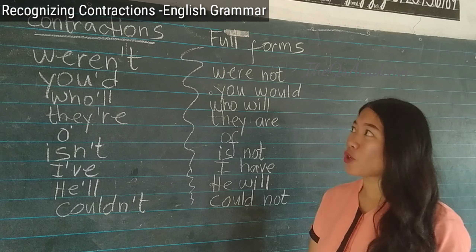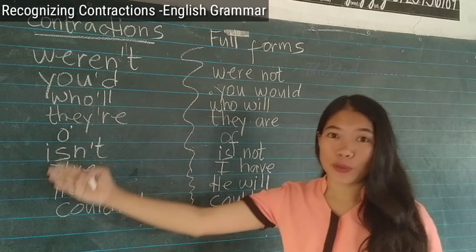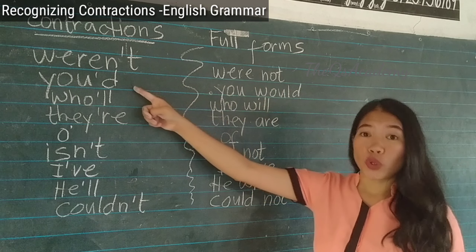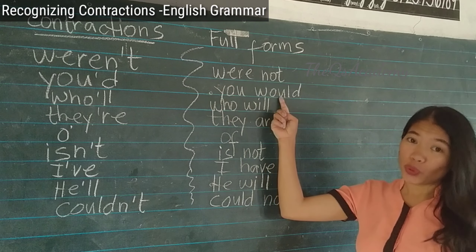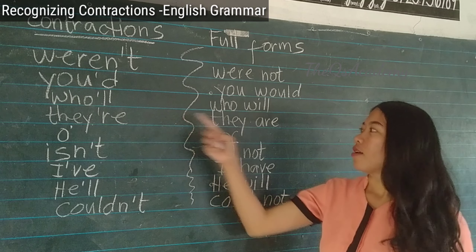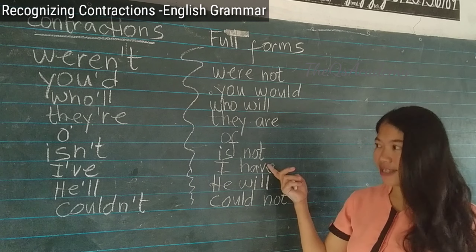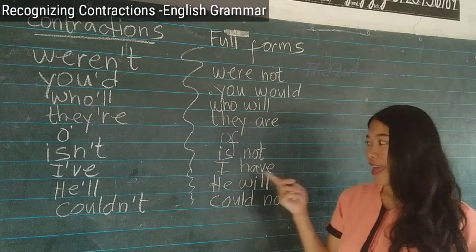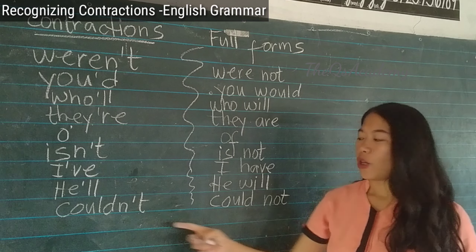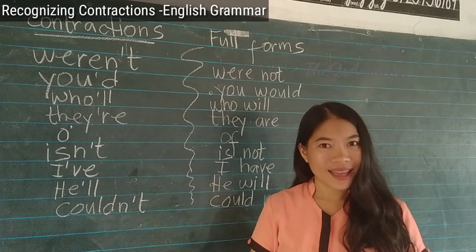Here are examples of contracted words and their full forms. 'Weren't' means 'were not'. 'Would' — 'you'd' means 'you would'. 'Who'll' means 'who will'. 'There' — 'they're' means 'they are'. 'O' means 'of'. 'Isn't' means 'is not'. 'I've' means 'I have'. 'He'll' means 'he will'. 'Couldn't' means 'could not'. And 'o'clock' means 'of the clock'.